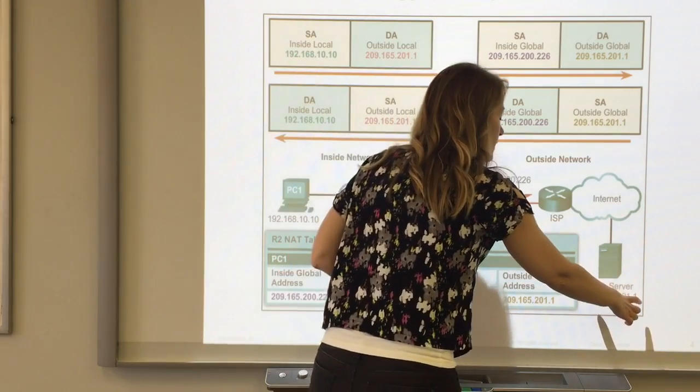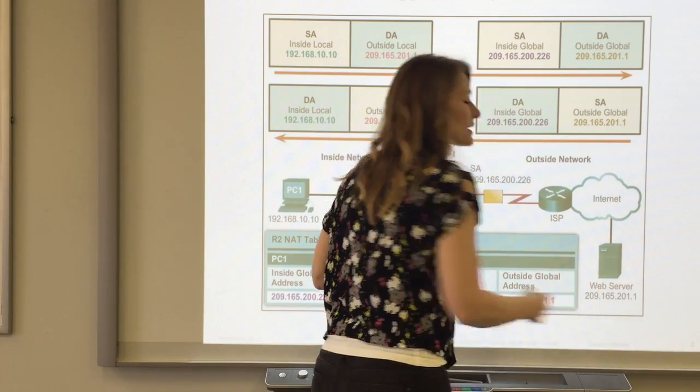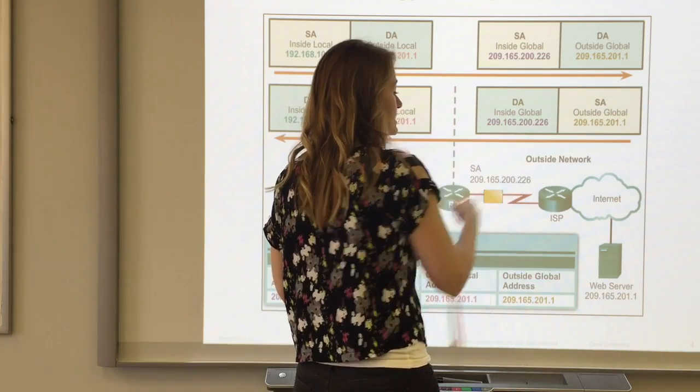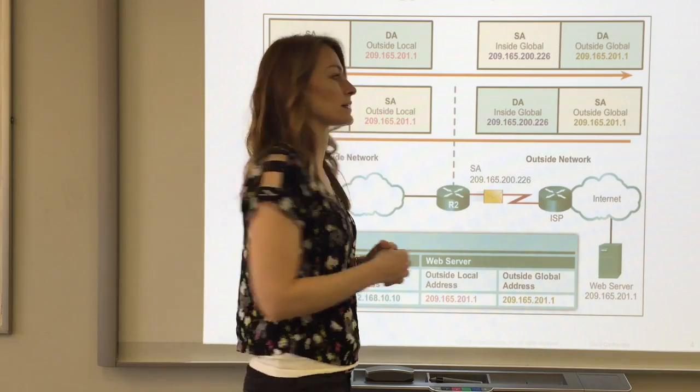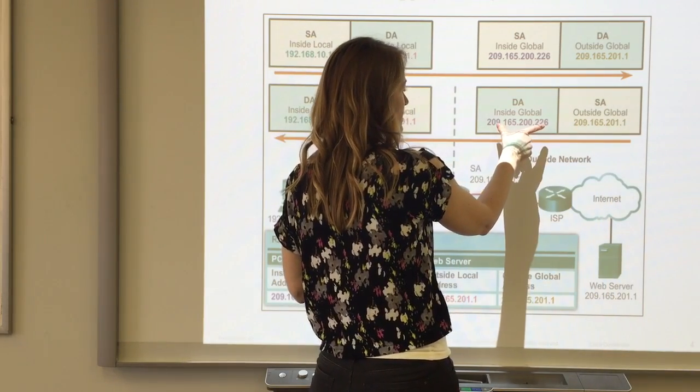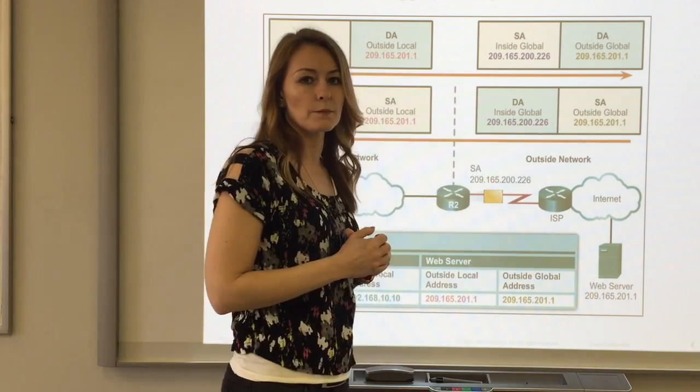The destination address from the perspective of Aunt Claire or the web server is 209.165.200.226. The source address is that, and the destination address is the inside global address of this 209 number.